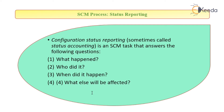The last stage is status reporting, also called configuration status reporting or status accounting. This is a SEM task that answers the following questions: What happened? Who did it? When did it happen? And what else will be affected? That means it keeps track of what change was done, who did the change, when the change was done, and what all things will be affected. That is all about the SEM process.